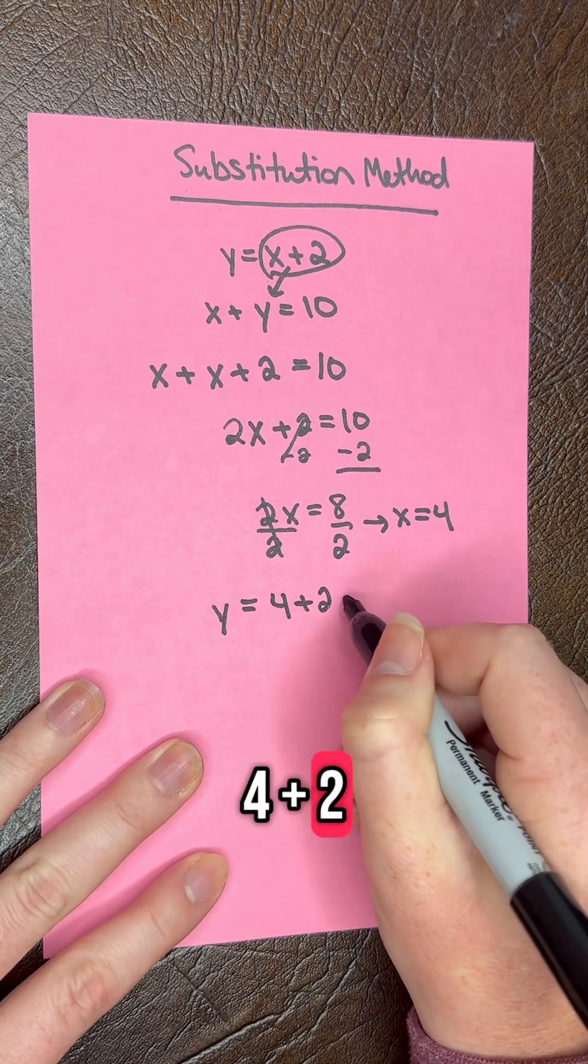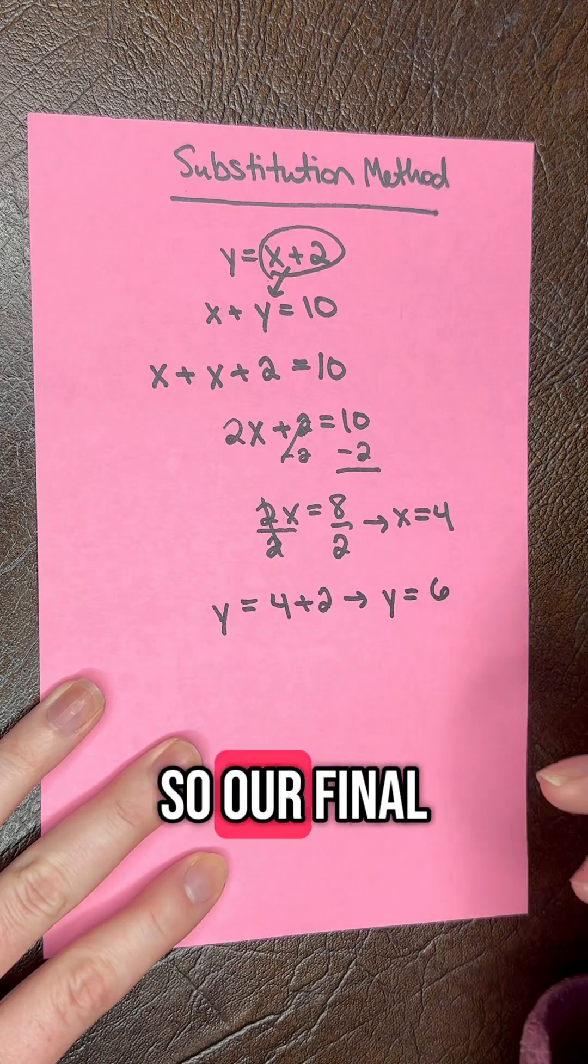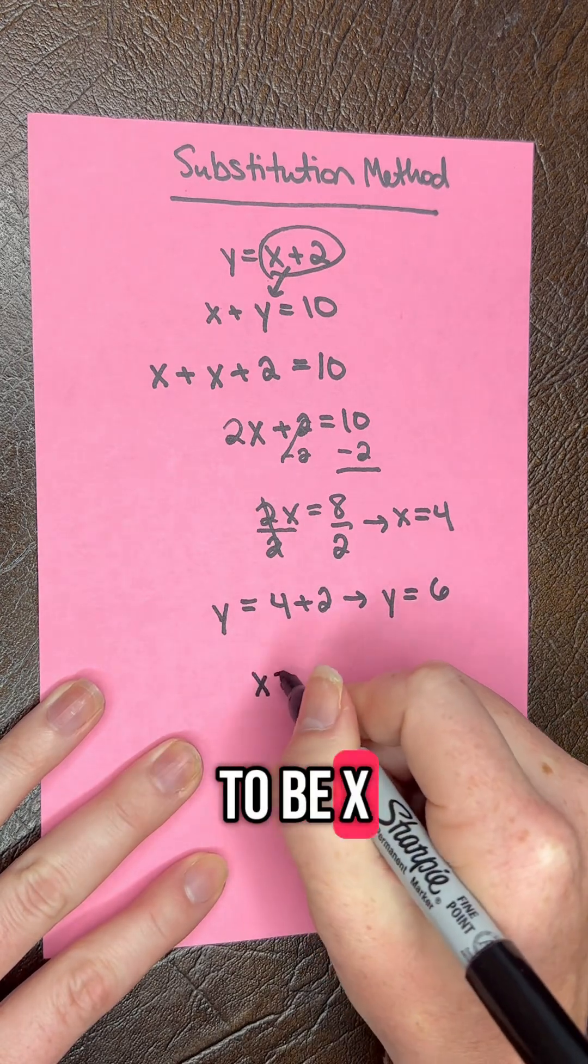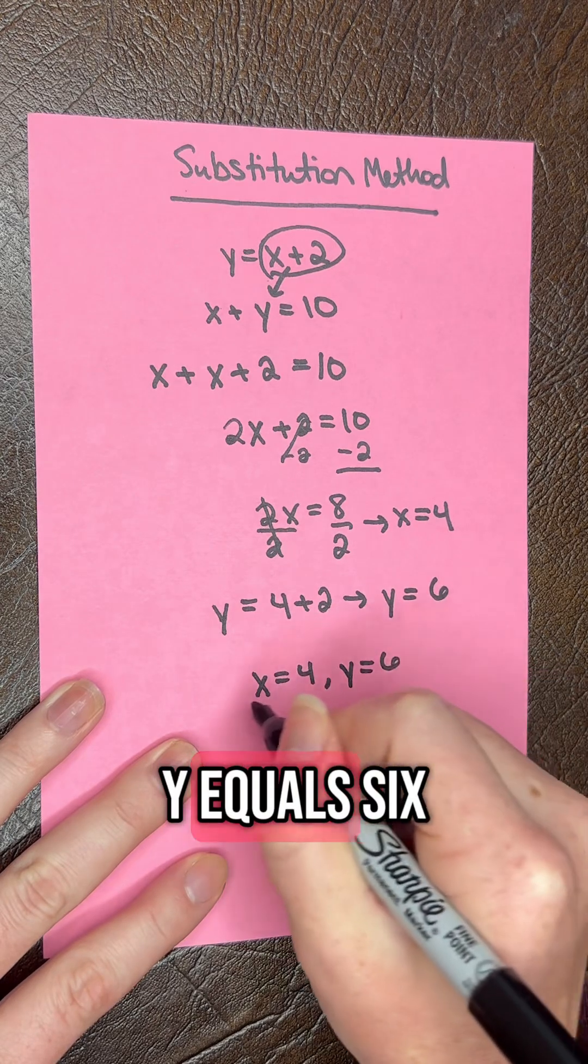4 plus 2, and we're going to get y is equal to 6. So our final answer is going to be x equals 4, and y equals 6.